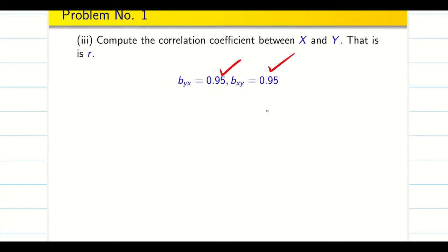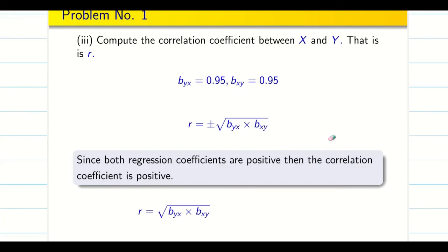Very important note: in this problem, bxy and byx are same, but in general it need not be the same. We have the property: if one of the values are greater than one, the other should be less than one. Both cannot be greater than one. Since both the regression coefficients are positive, r is also going to be positive. When you take square root, I am going to get 0.95.